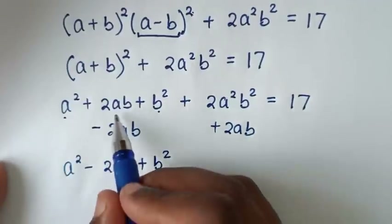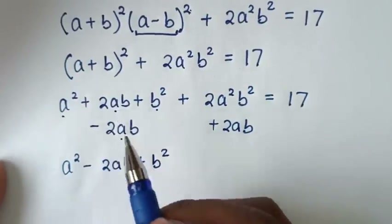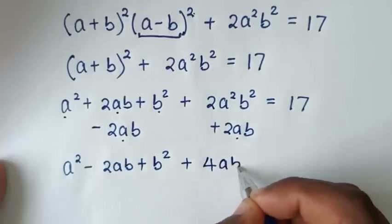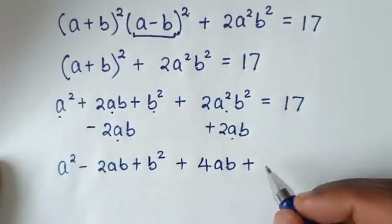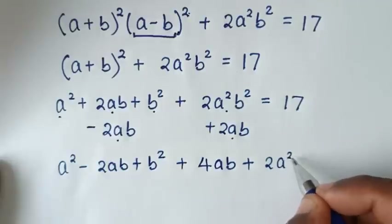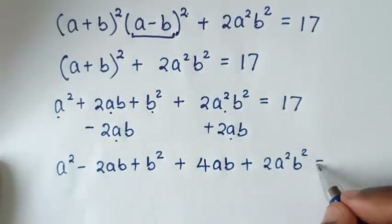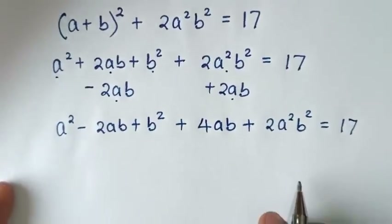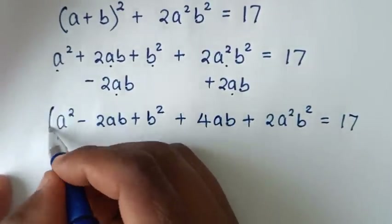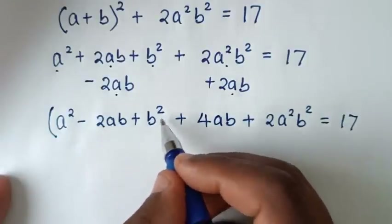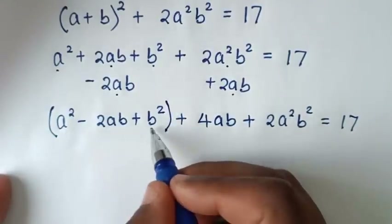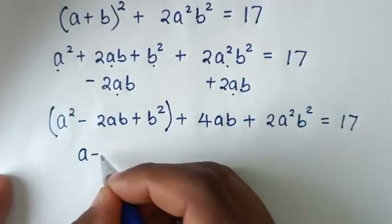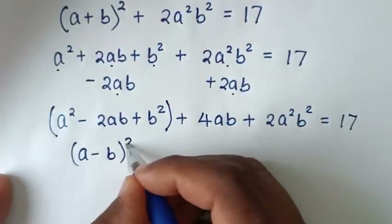Then we are left with 2ab + 2ab, which is plus 4ab, then plus 2a²b² equals 17. Then in the next step, a² - 2ab + b² is the expansion of the perfect square (a-b)².